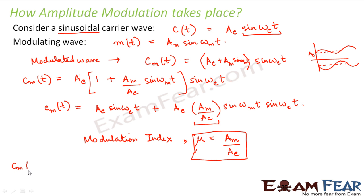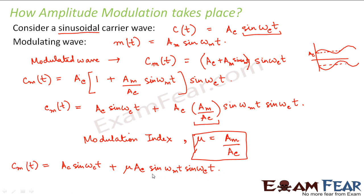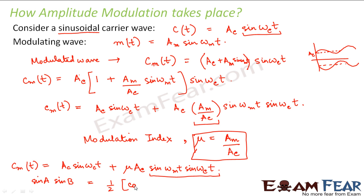So we can say CM of t is equal to AC sine omega-c t plus mu AC sine omega-m t sine omega-c t. We have it in the form sine A sine B. In trigonometry, we are aware of the formula: sine A sine B equals half cos(A minus B) minus cos(A plus B).